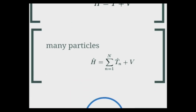For many particles, whereas one particle was a simple equation, for many particles you're dealing with sigma notation. You can already see that you're going to have to apply a transformation to a list, not just a certain number, because you're dealing with multiple particles.